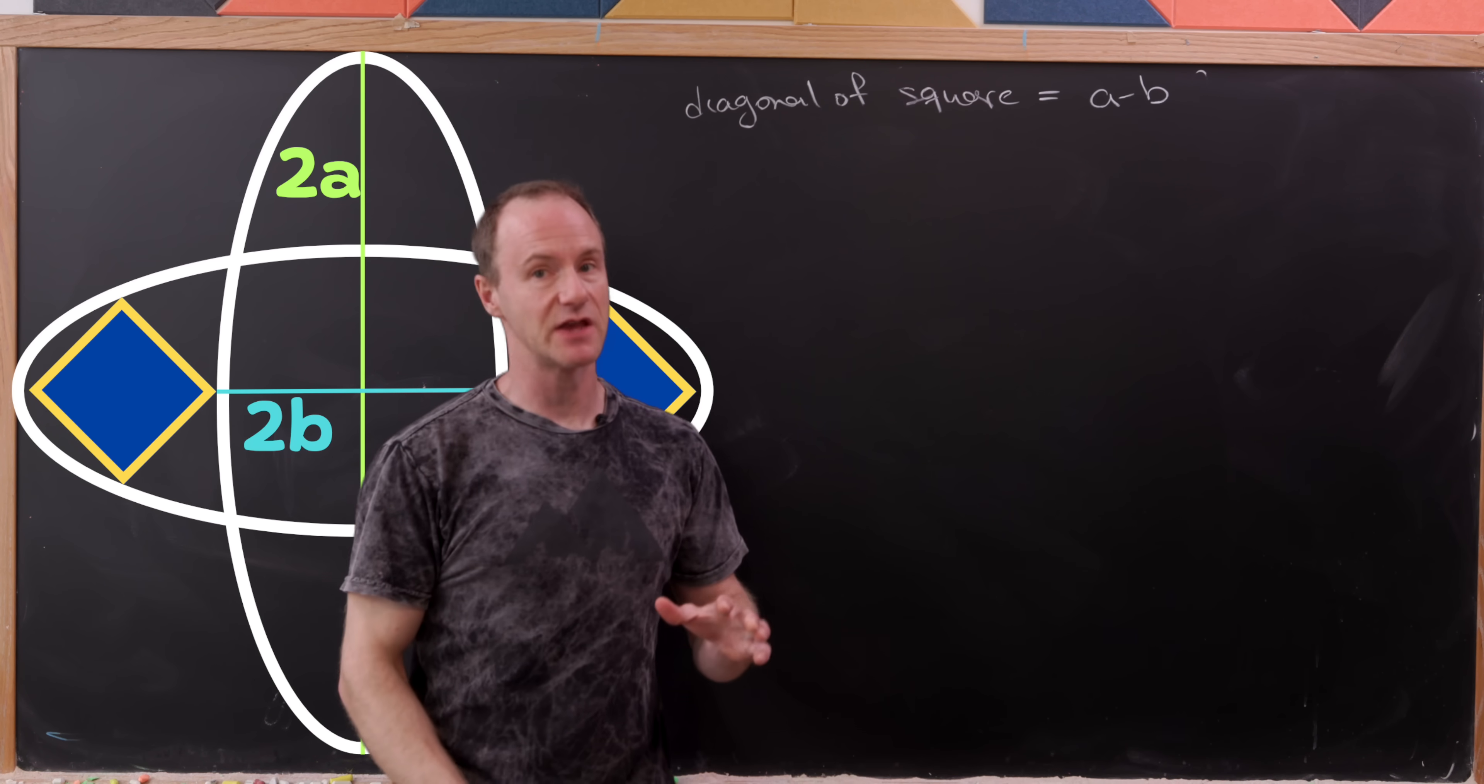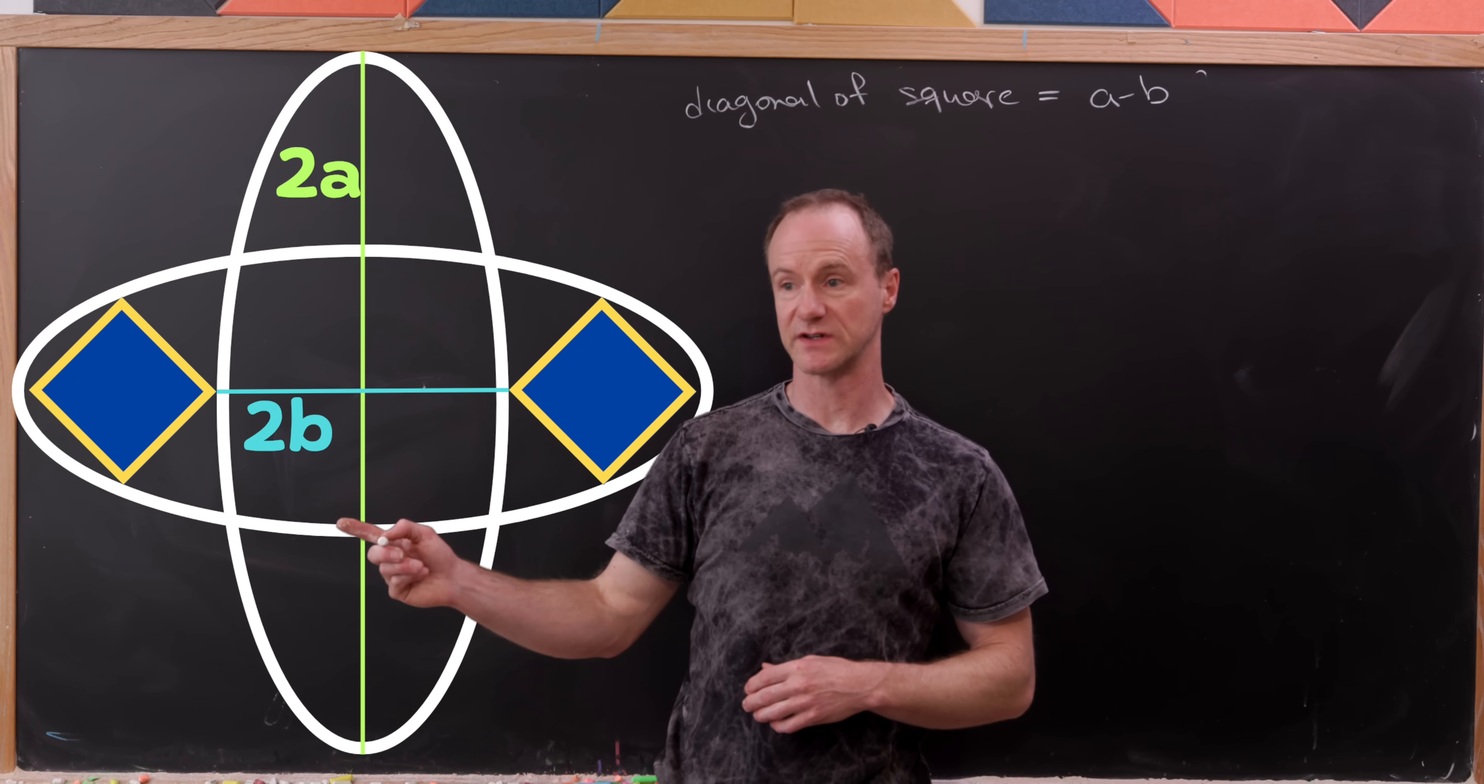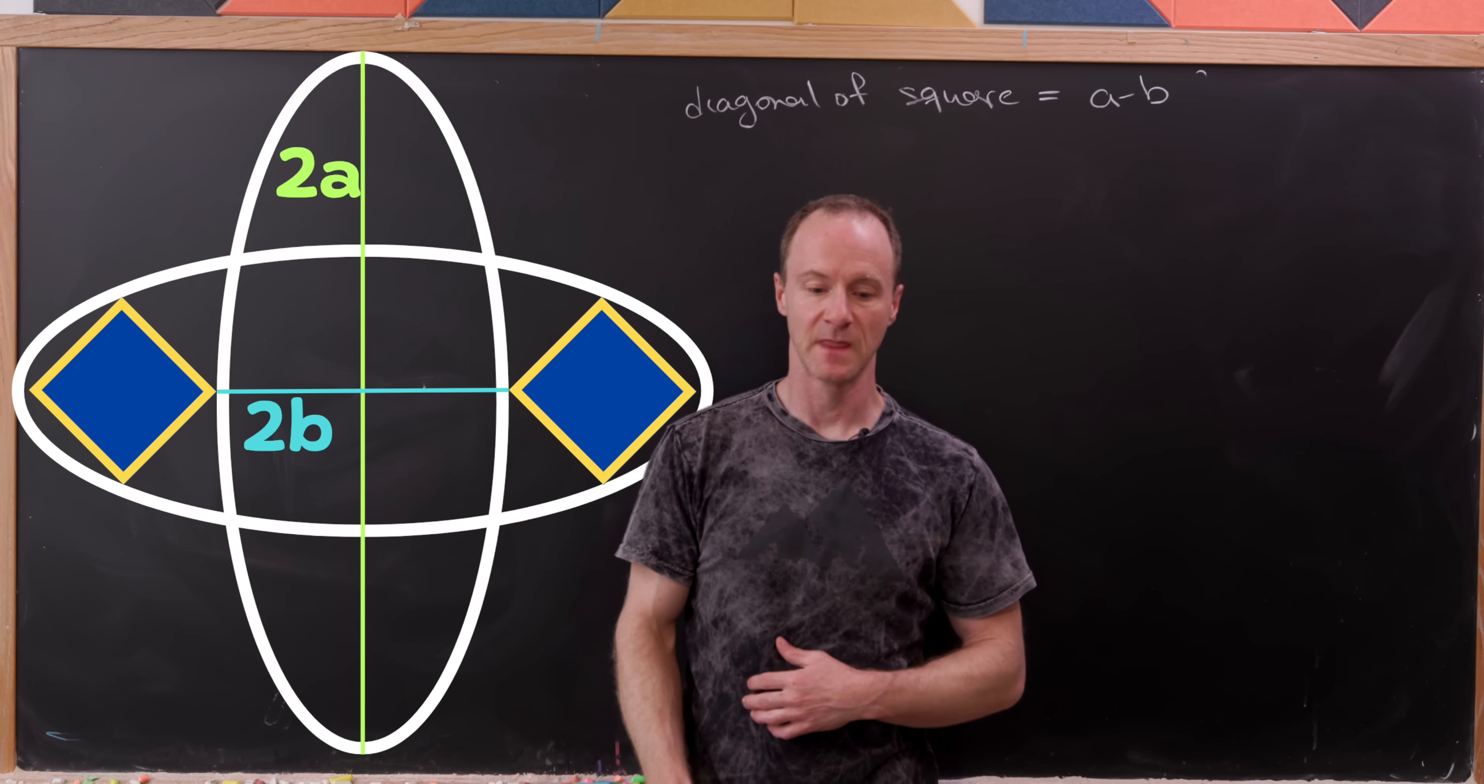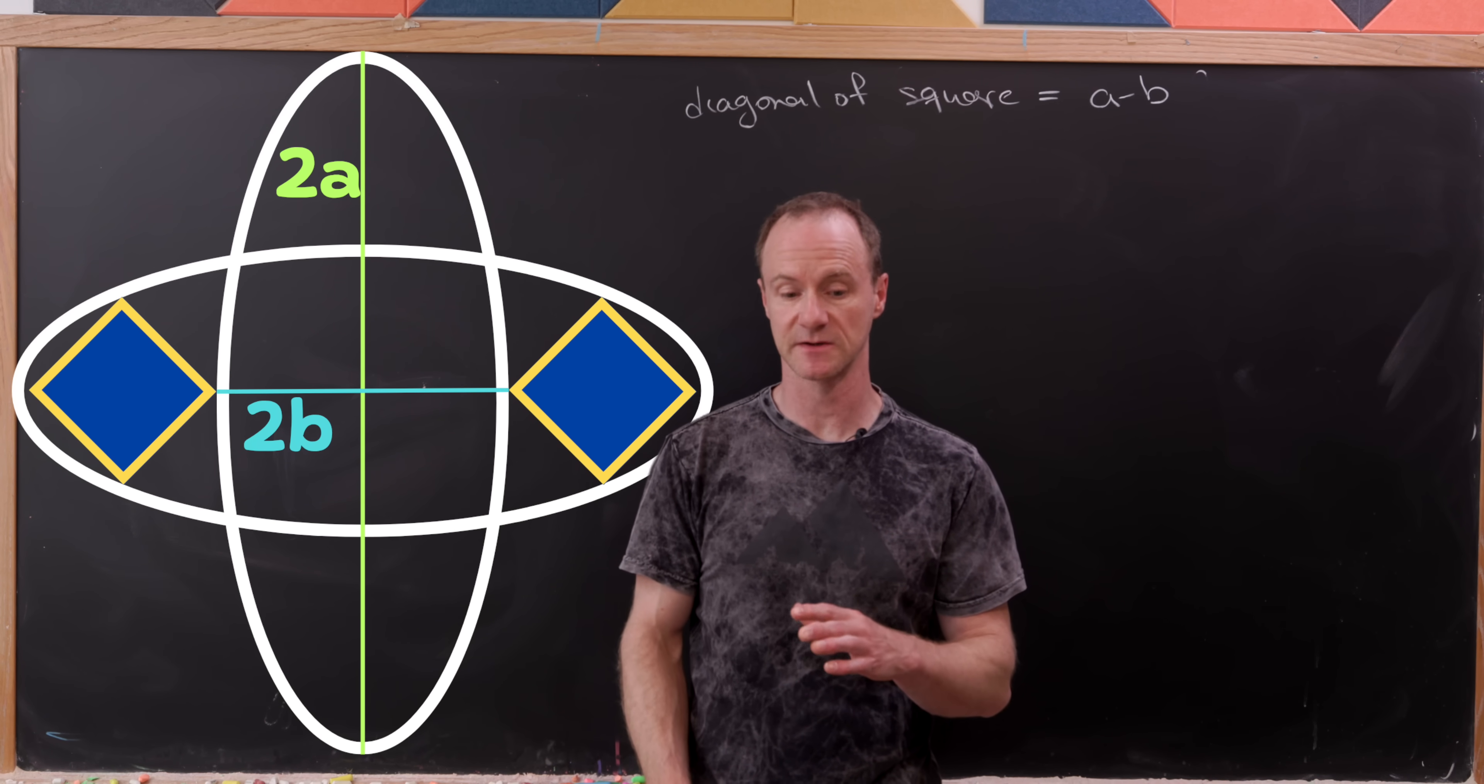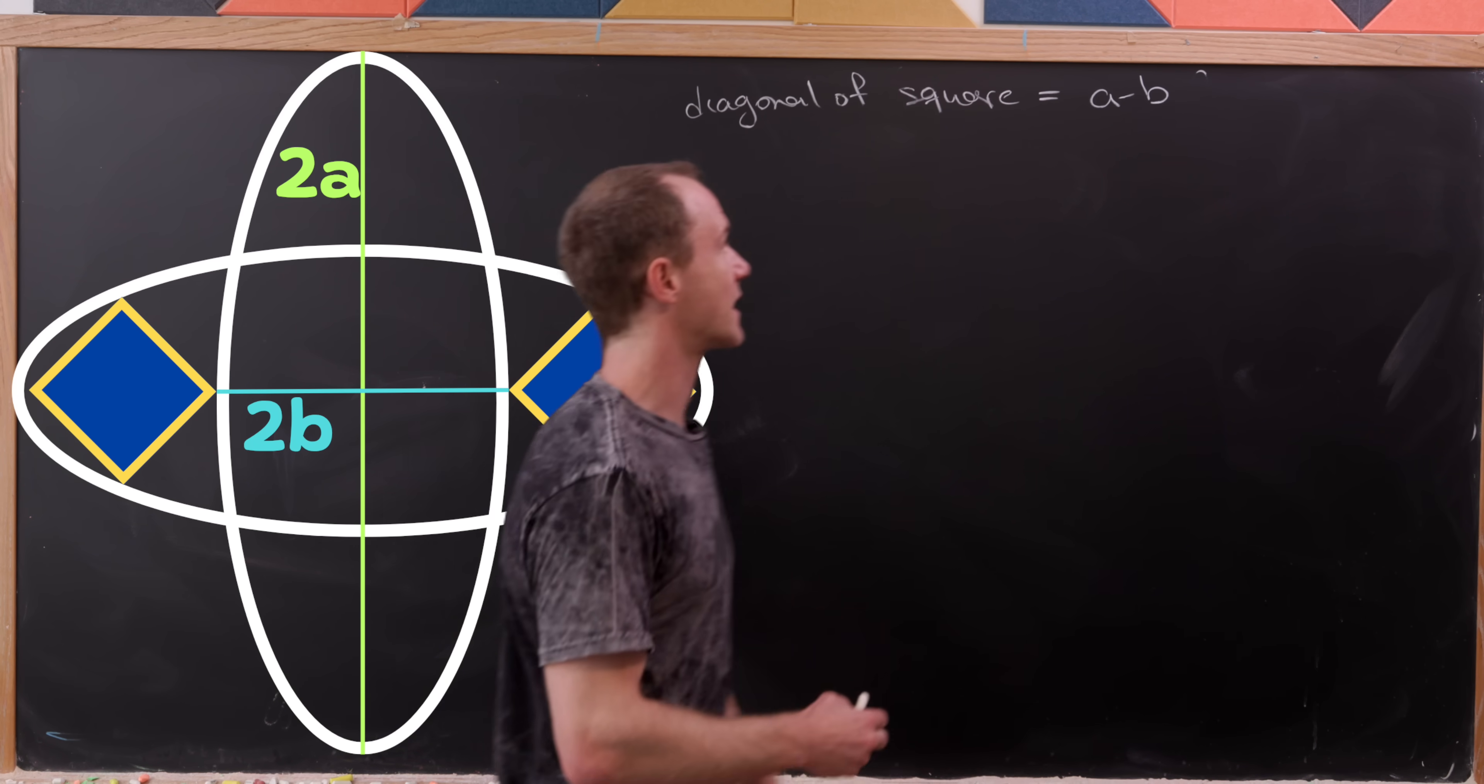That's because we have A units from the center of the ellipse to one vertex of the square, maybe the furthest right vertex. And then it's B units from the center of the ellipse to the closest vertex. So that difference is pretty clearly going to give us a diagonal of the square.